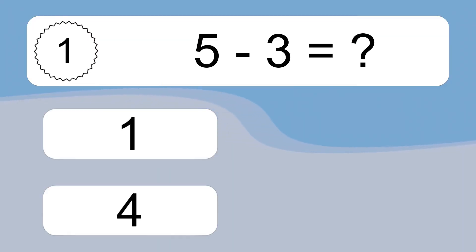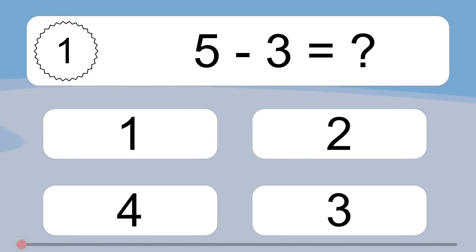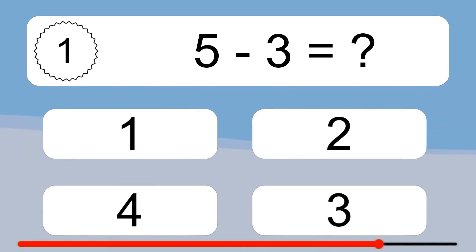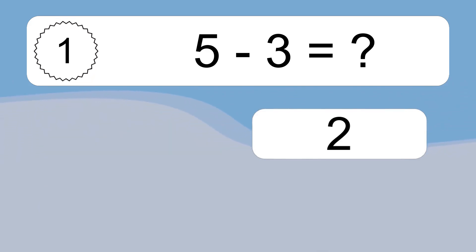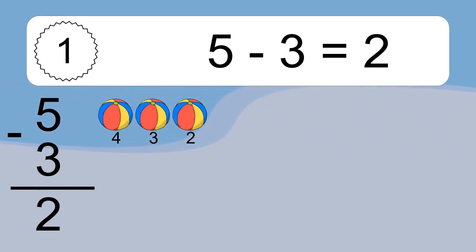5 minus 3 equals what? 5 minus 3 equals 2. Let's count it: 4, 3, 2.